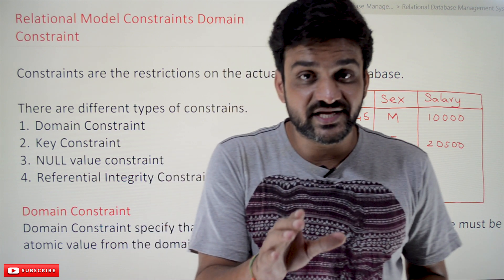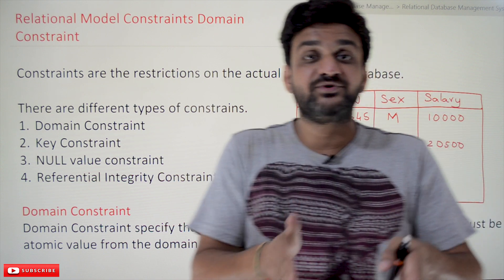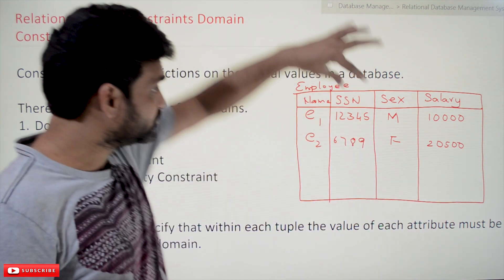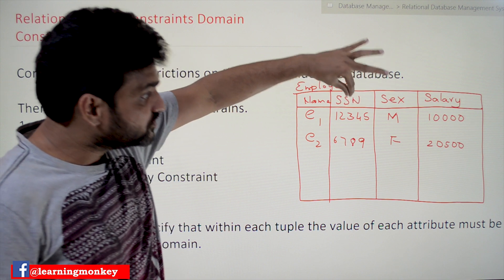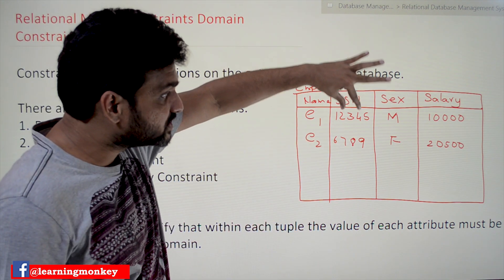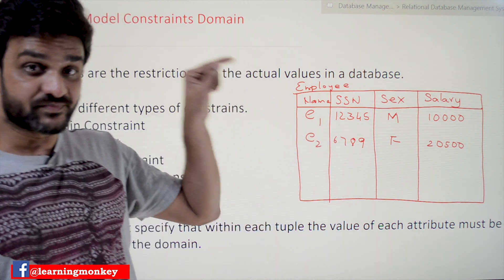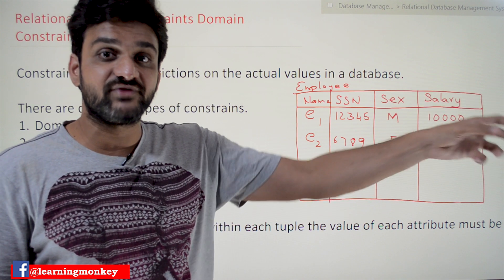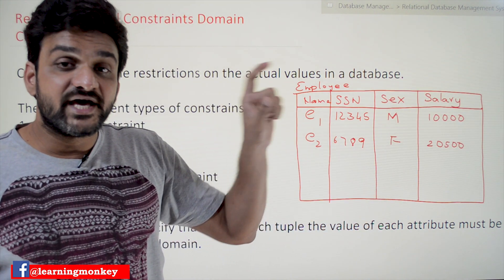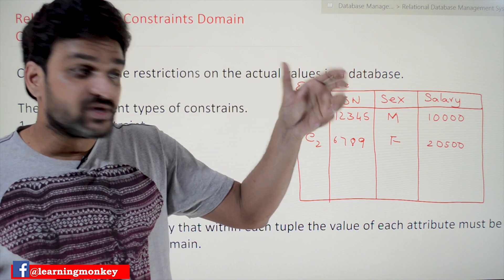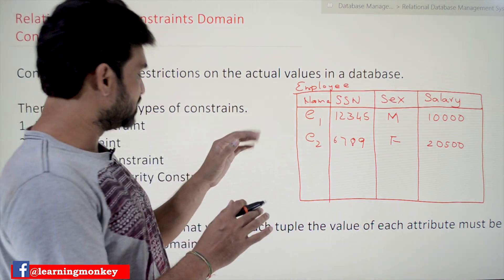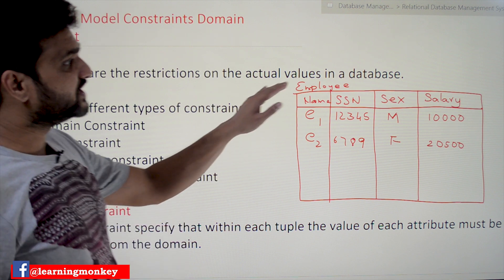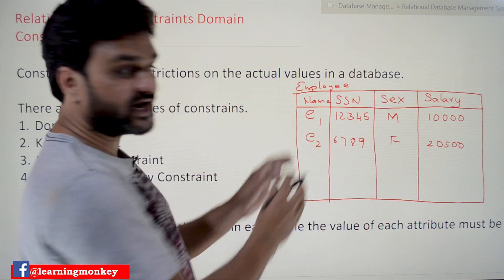For every attribute, the domain of values to be inserted has to be identified. That identification can be done by using the data type. When creating a table, as discussed in previous videos, we assign data types to each column name. I have taken the same employee table with fewer attributes for better understanding.